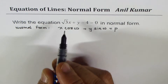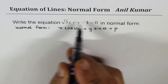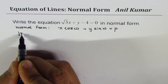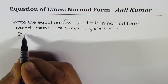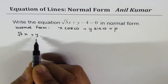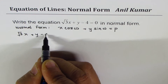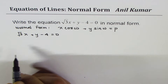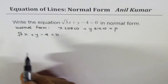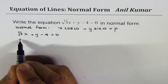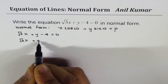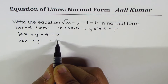Let's begin to simplify the given equation — rather, transform it into normal form. We are given √3x + y − 4 = 0. The first step is to bring this constant to the right side, so we have √3x + y = 4.